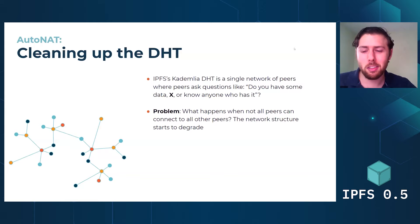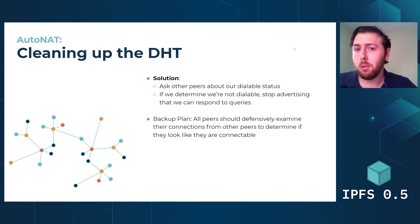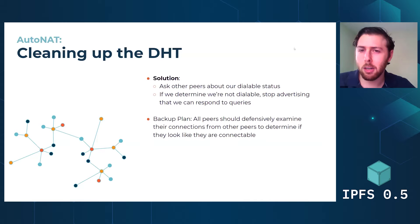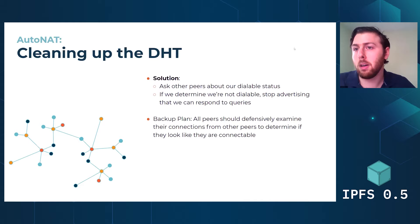The network structure starts to degrade and the mathematical properties that allow for logarithmic lookup times start to fall apart. So the plan is you ask other peers if they think you're dialable and you collect that information. And if you decide that you, after interpreting all the results from your peers, are not dialable, then you stop telling people that you are part of the DHT routing layer — that you're a server available to respond to queries — because you're not, you're unavailable.